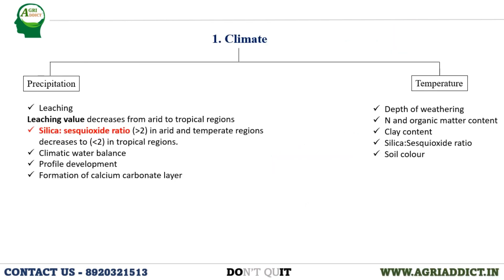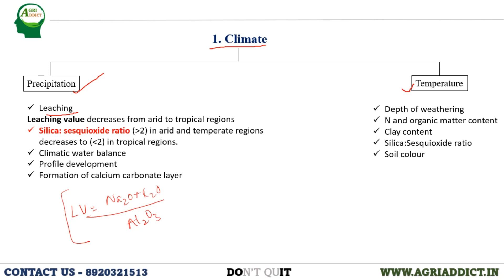The next factor is climate. The most important factor influencing soil formation is climate, where precipitation and temperature play an equal role. Regarding precipitation, the extent, distribution, and pattern of rainfall will increase the leaching down of water and nutrients from the soil. The most important thing to consider here is leaching value, which is the ratio of the sum of Na₂O and K₂O to Al₂O₃. To understand leaching, we should first be clear about what leaching is.